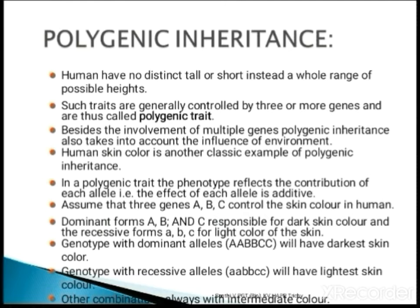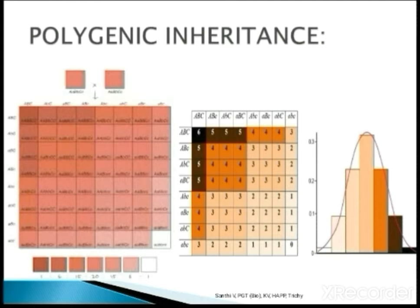That is why you can call this quantitative inheritance also. Looking at the diagram for polygenic inheritance, you can see the variation of colors. In the Punnett square diagram, you can see capital A, capital B, capital C. When they combine in the corner where all six genes are capital letters, those individuals will have the darkest skin color.